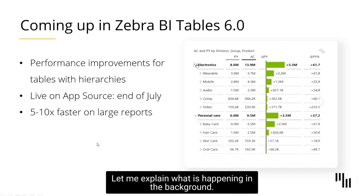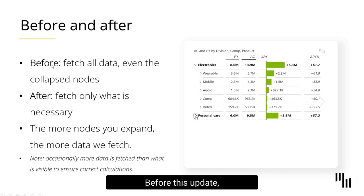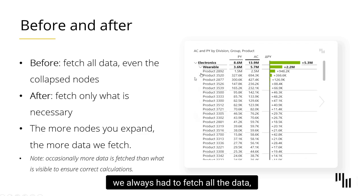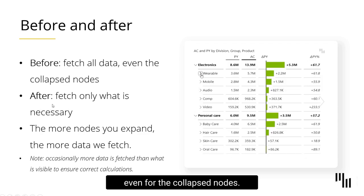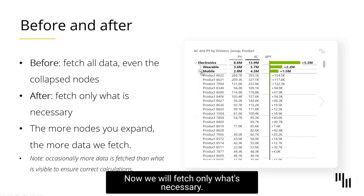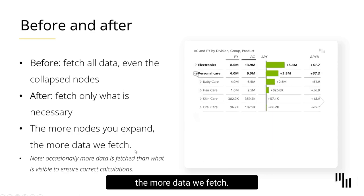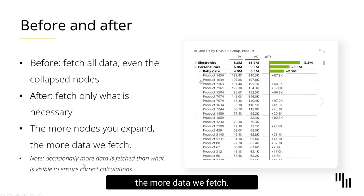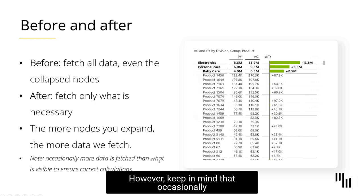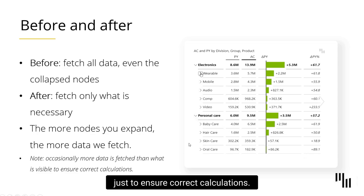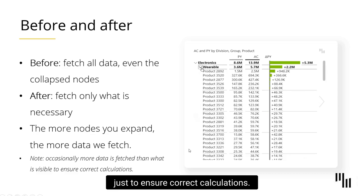Let me explain what is happening in the background. Before this update we always had to fetch all the data even for the collapsed nodes. Now we will fetch only what's necessary — basically, the more nodes you expand, the more data we fetch. However, keep in mind that occasionally we need to fetch more data than what is visible, just to ensure correct calculations.